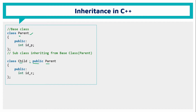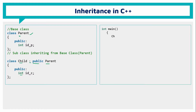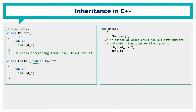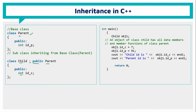In the subclass body, we use the access specifier as public and declare variable IDC. In the main function, we create an object of the child class. Using this object, we can access the subclass variables as IDC and also access the parent class properties through the child class.